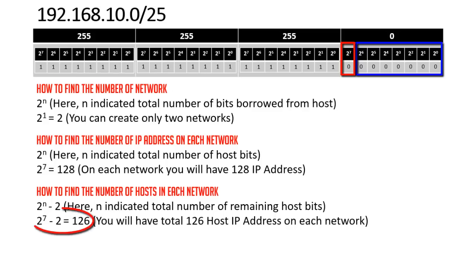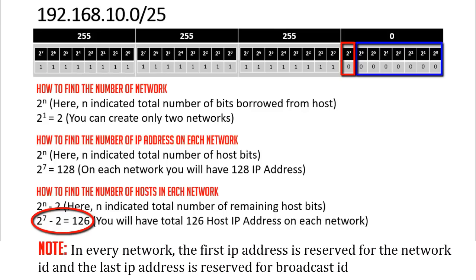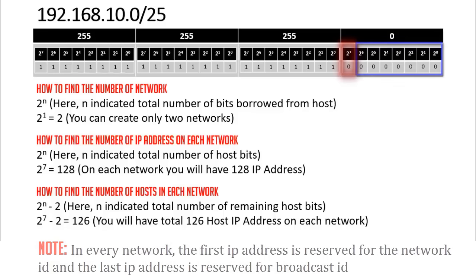Why do we subtract 2? Because on every network the first IP address is reserved for the network ID and the last IP address is the broadcast ID — these two addresses cannot be used. That's why we subtract 2 on every network.